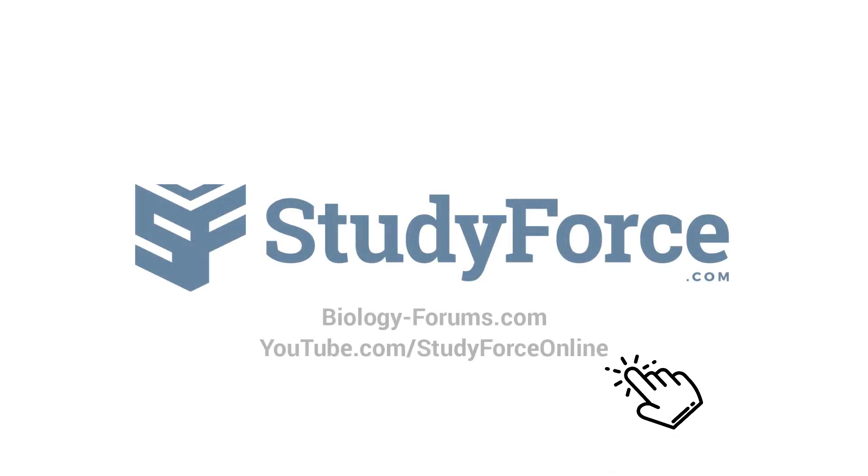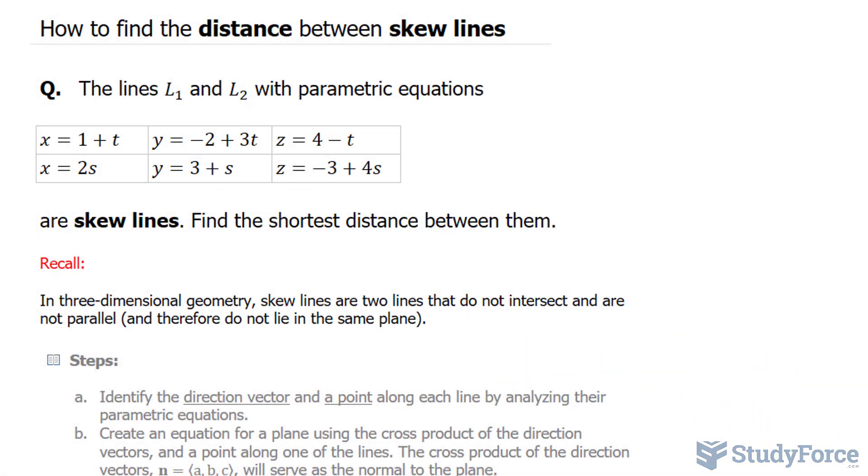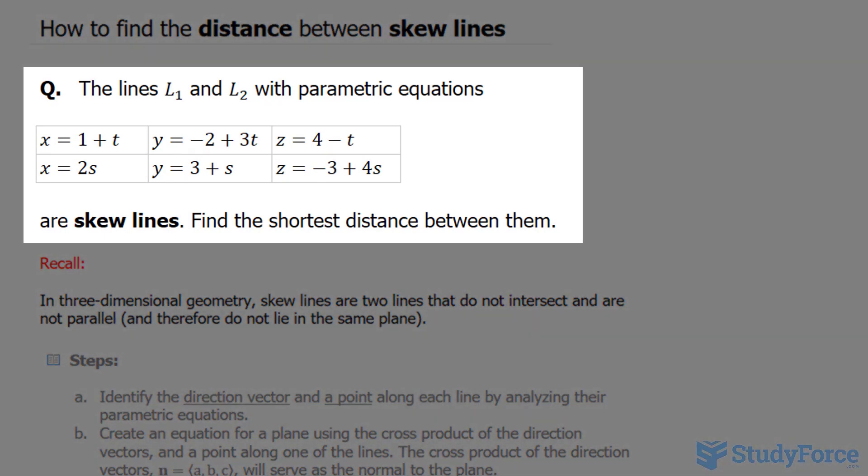In this lesson, I'll show you how to find the distance between skew lines. The question reads, the lines L1 and L2 with the parametric equations shown underneath are skew lines. Find the shortest distance between them.